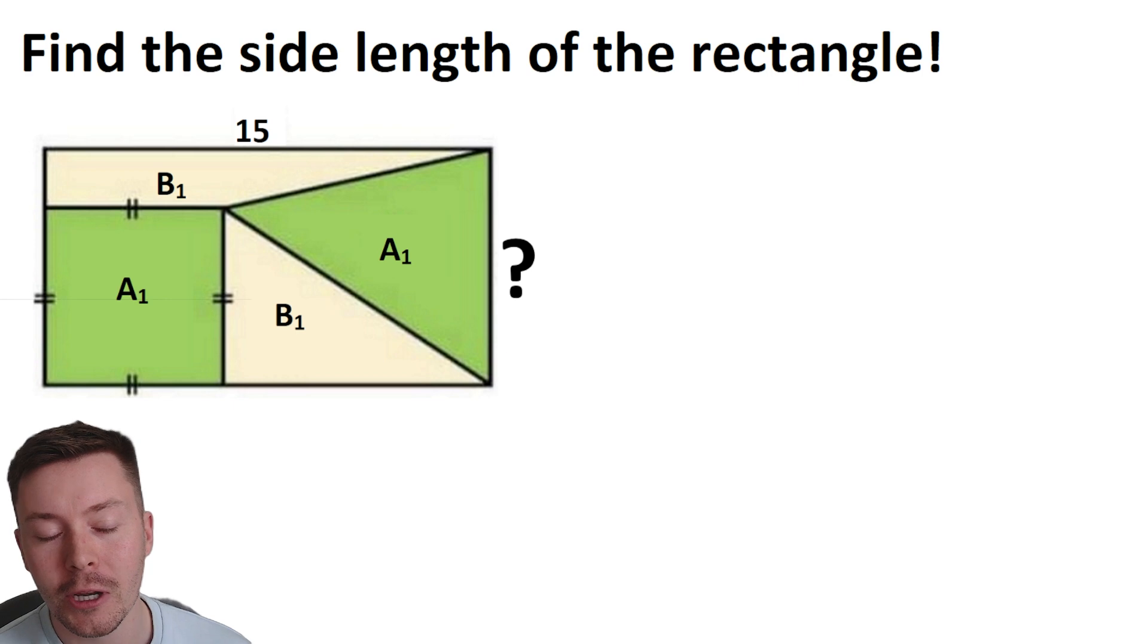It's one that I've adapted from another problem I found, and it's all about finding the height of this rectangle. Now the key thing that we need to know is that the area A1 is equal to the area A1, i.e. the area of the green square is equal to the area of the green triangle, and the area B1 is equal to B1, so the area of the yellow trapezium is equal to the area of the yellow triangle. Now the width of this rectangle we're told is 15.